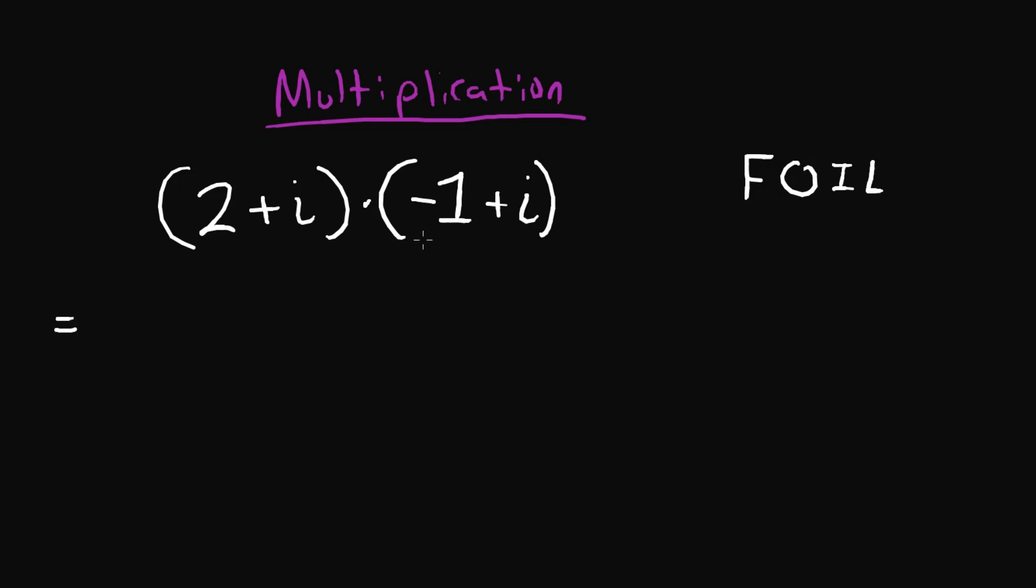So we get, let's do the first. So 2 times negative 1. Then we'll do outer. So that's plus 2 times i. That's this one and this one. Then we'll do inner. That's minus i. And then let's do plus i squared.